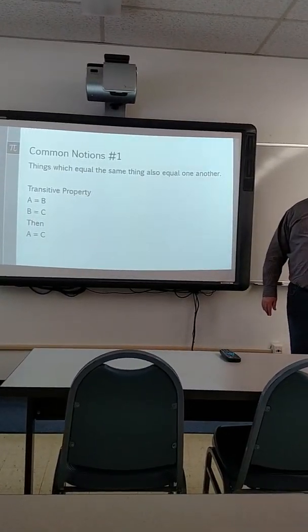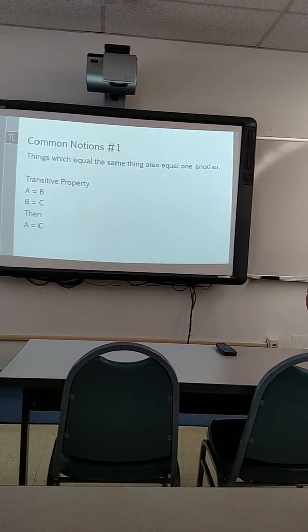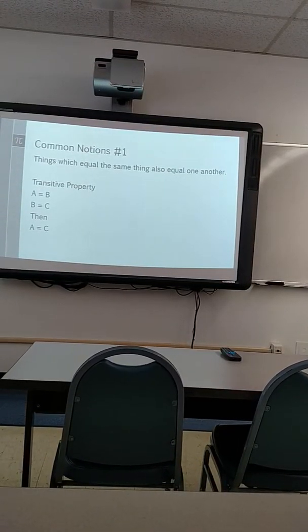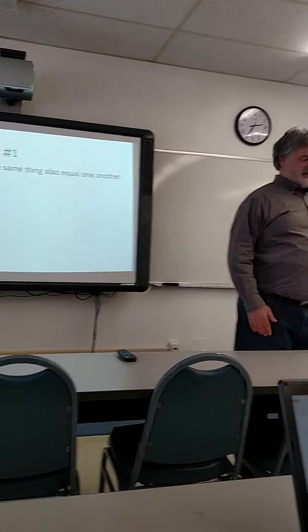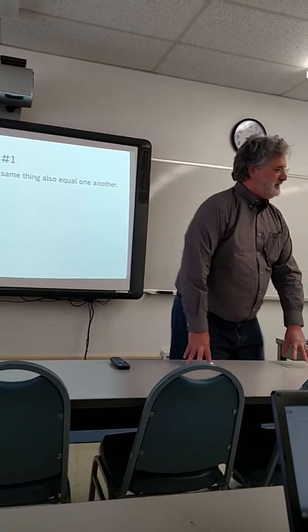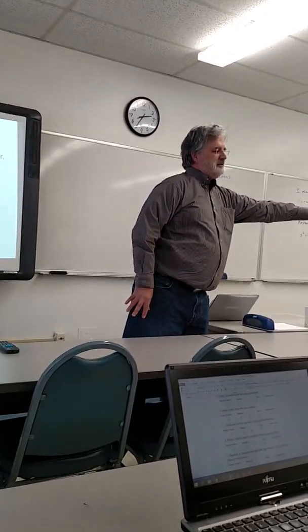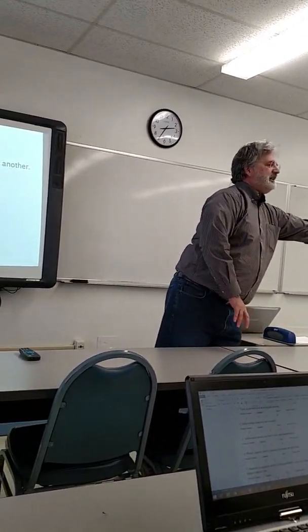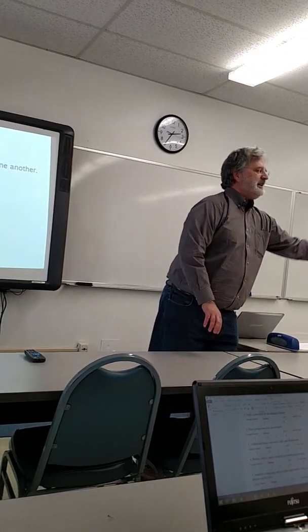Now, I said there were five common notions. The first one is things which are equal to the same thing also equal one another. In our modern English, we call that the transitive property. So instead of using math, this table and that table over there are equal, this table and that table over there are equal.